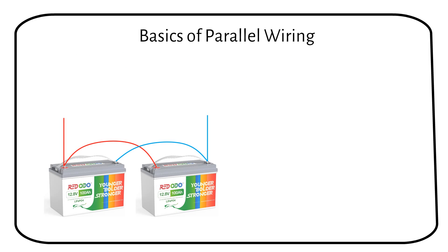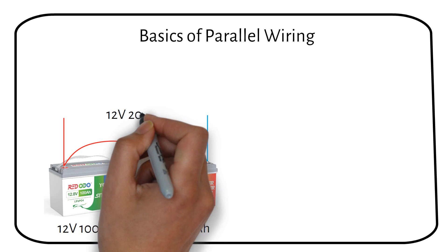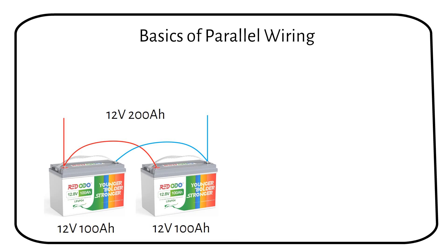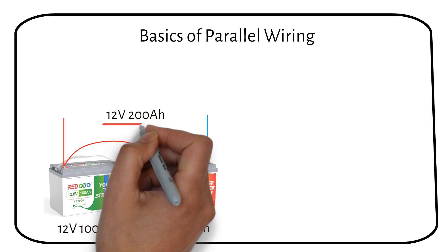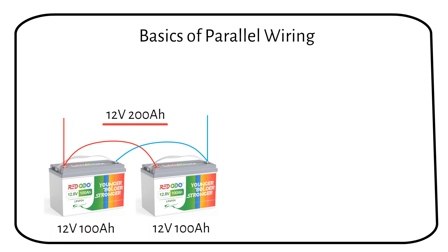Parallel wiring combines all the positive terminals and all the negative terminals of the batteries. This adds up the capacity or amp hours while the voltage stays the same. If you want to increase the total power of your battery but don't want to increase the voltage, then parallel wiring is the only option.